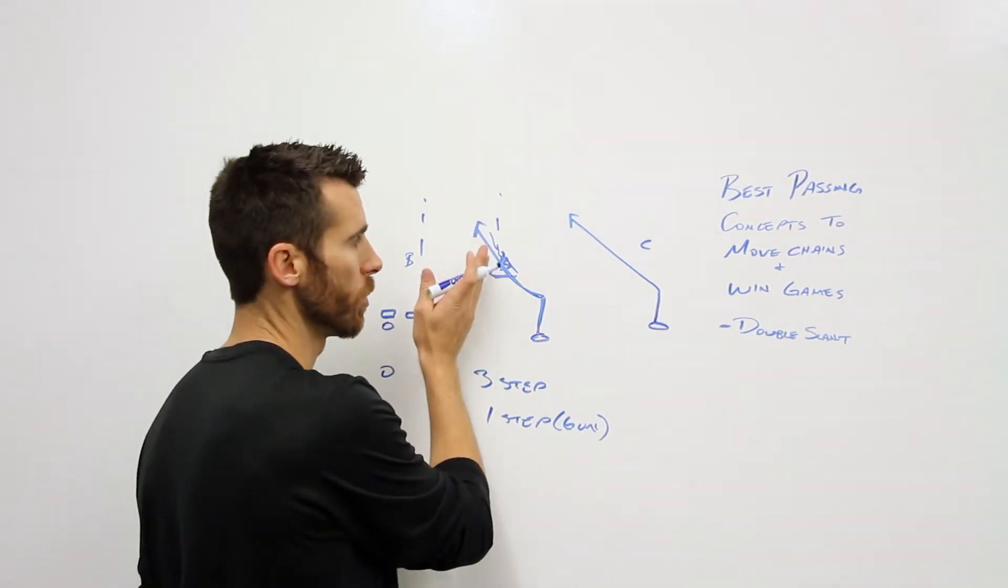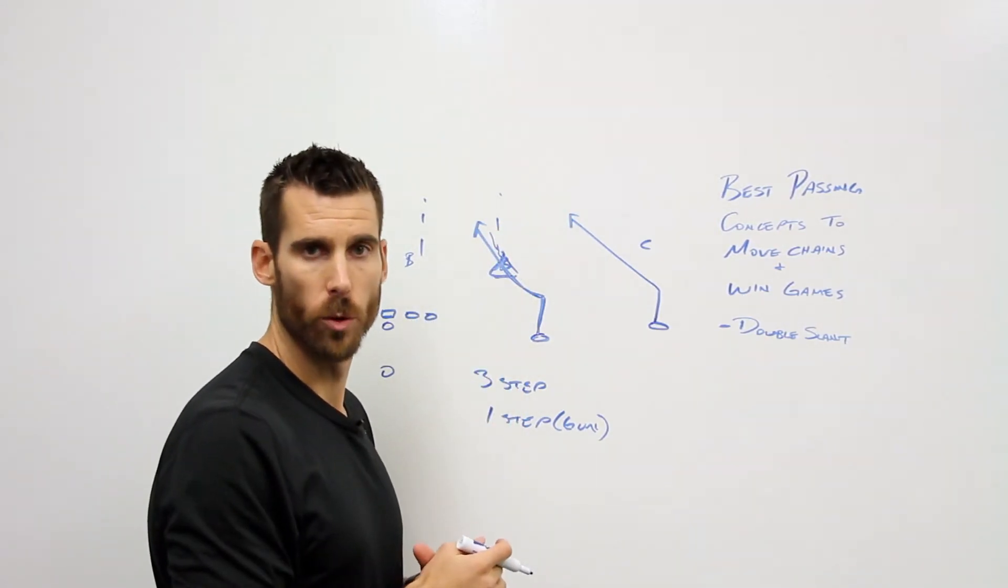So really simple. Eyes are in one place. We make a simple decision and a quick execution of our footwork and our throw.